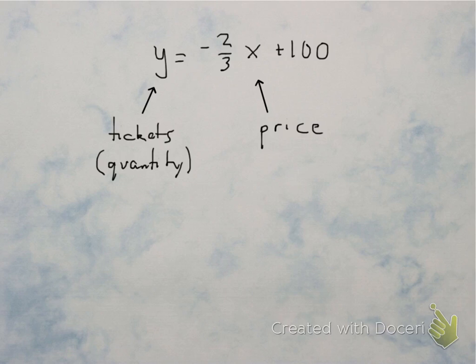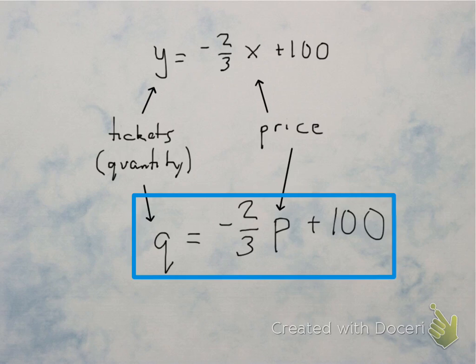And tickets, that's a quantity, the number of tickets. You could change that to Q. So all I did here was I changed the variable letters just to more accurately represent what's going on in our problem.